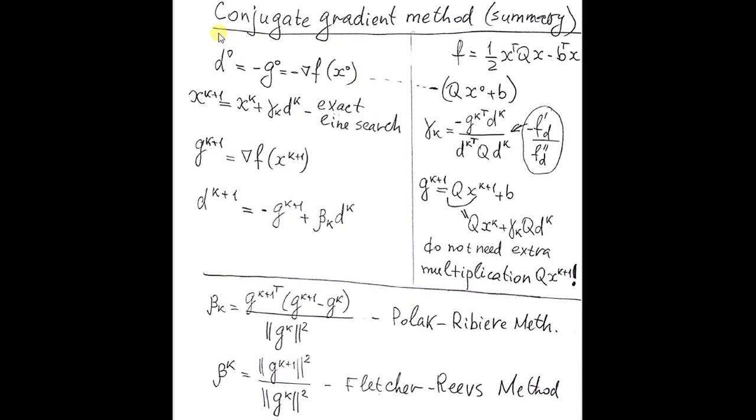Now I will summarize conjugate gradient method. We will start at point x0, compute gradient and use minus gradient as first direction. Then we perform exact line search in this direction.